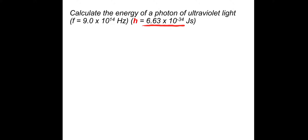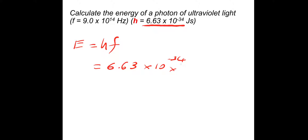So we've got the frequency and Planck's constant. You're going to need this for subsequent questions, so either make sure you know it or write it down if you can't remember it. So this would be E equals HF to get the energy. So 6.63 times 10 to the minus 34, multiplied by the frequency which is 9 times 10 to the 14. So that gives an energy of 5.97 times 10 to the minus 19 joules.